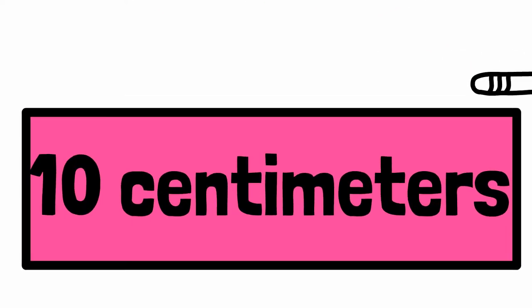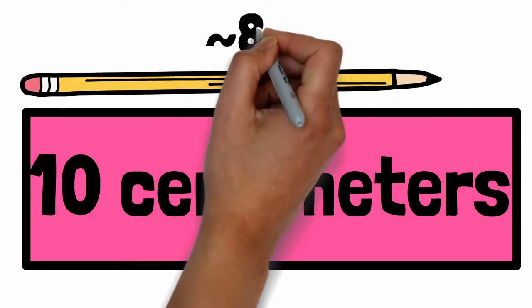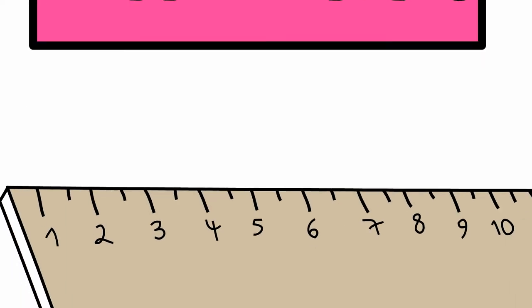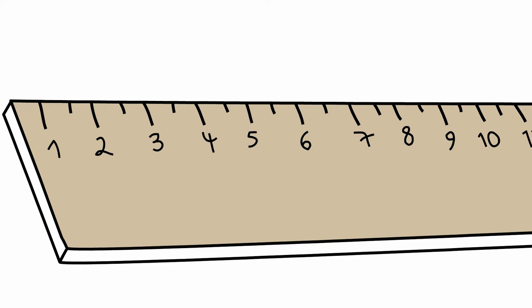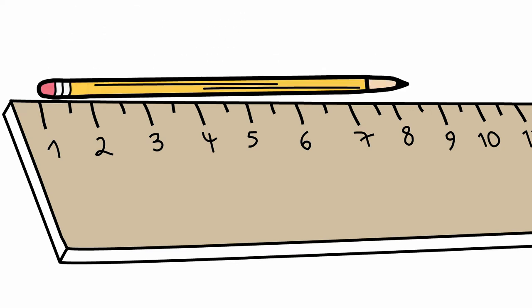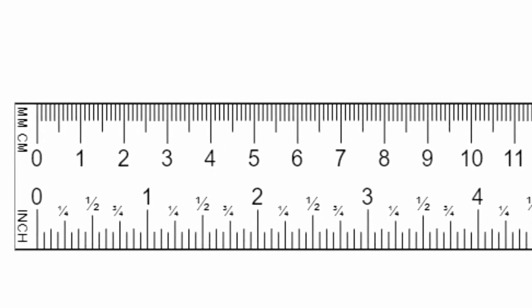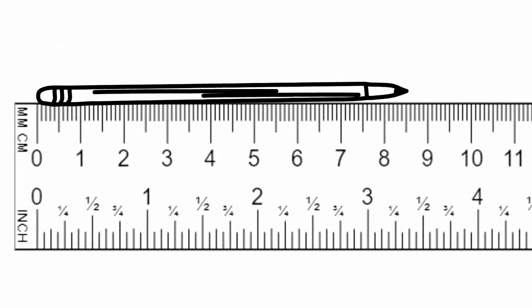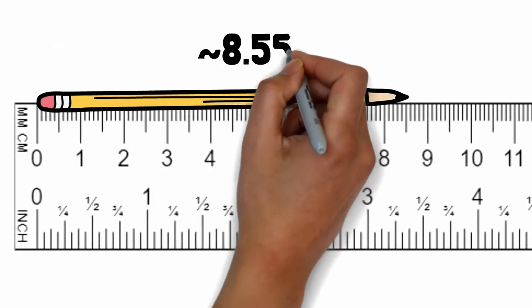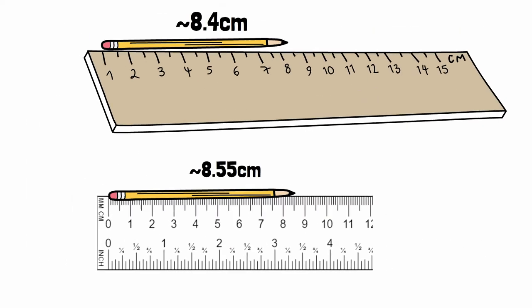When we measure the pencil with the first ruler we estimate about 8 centimeters long. With the second ruler we realize it's a little longer so we estimate about 8.4 centimeters long. Finally with the last ruler we can see the pencil is somewhere between 8.5 and 8.6 so we estimate 8.5 centimeters long.